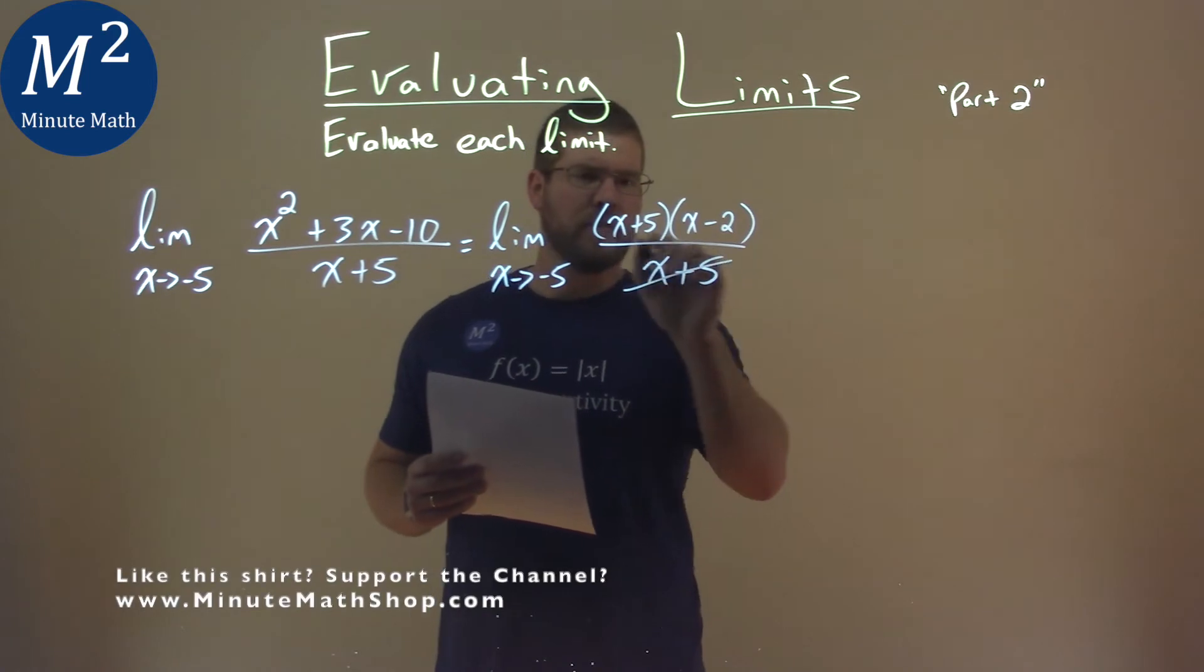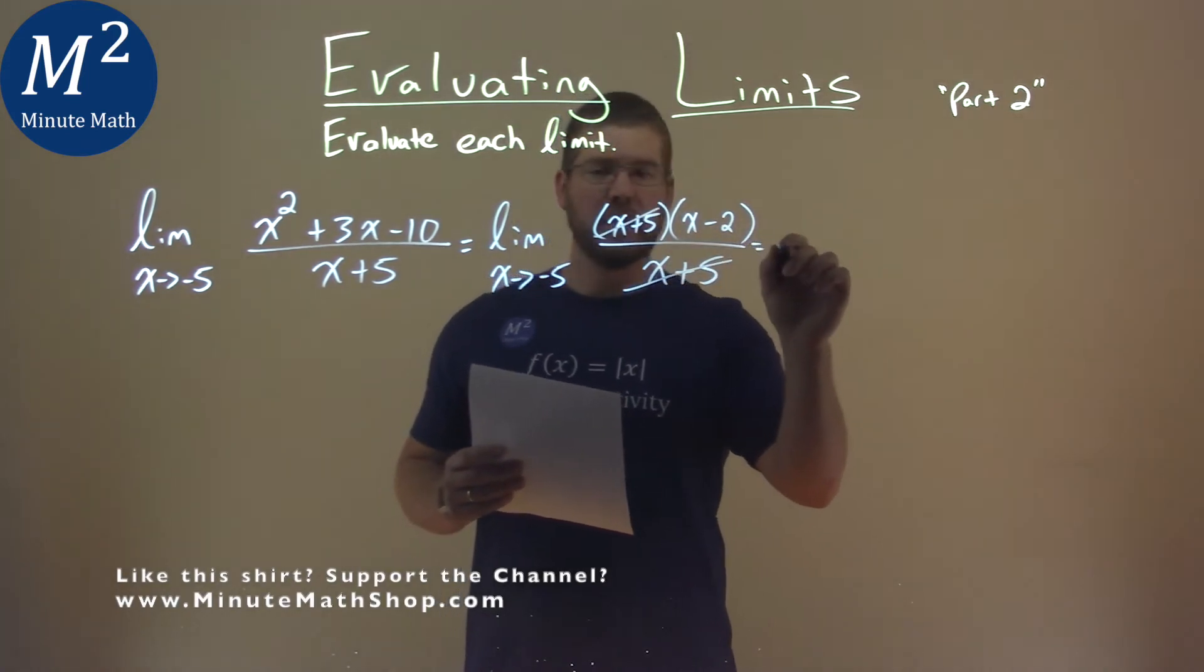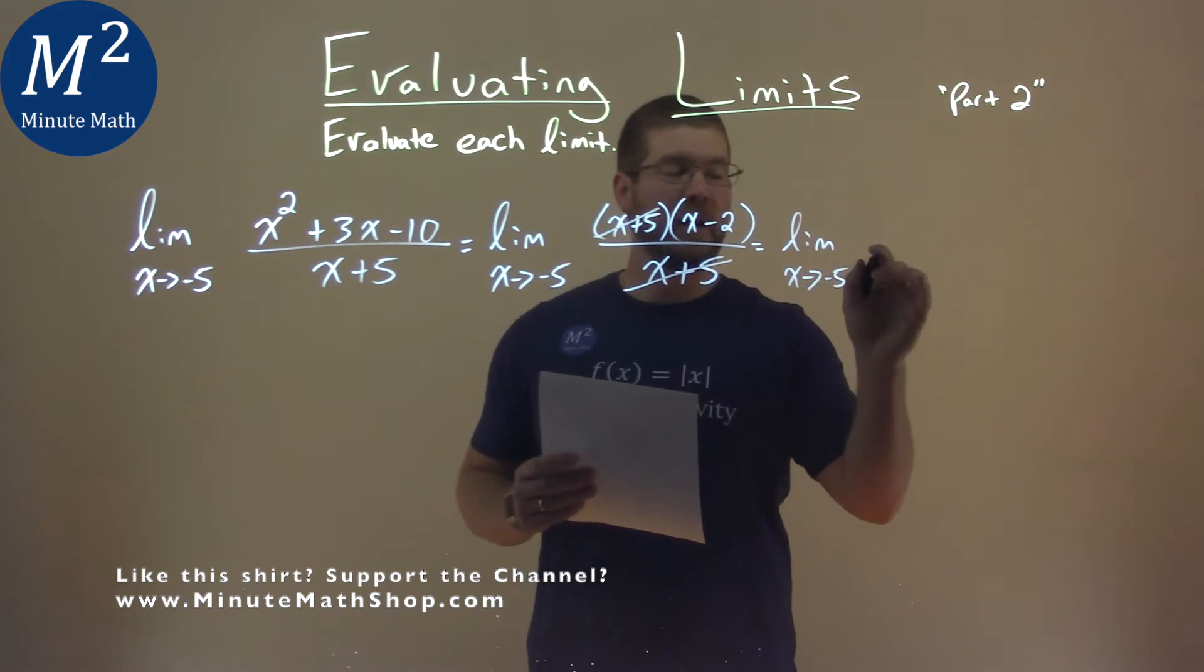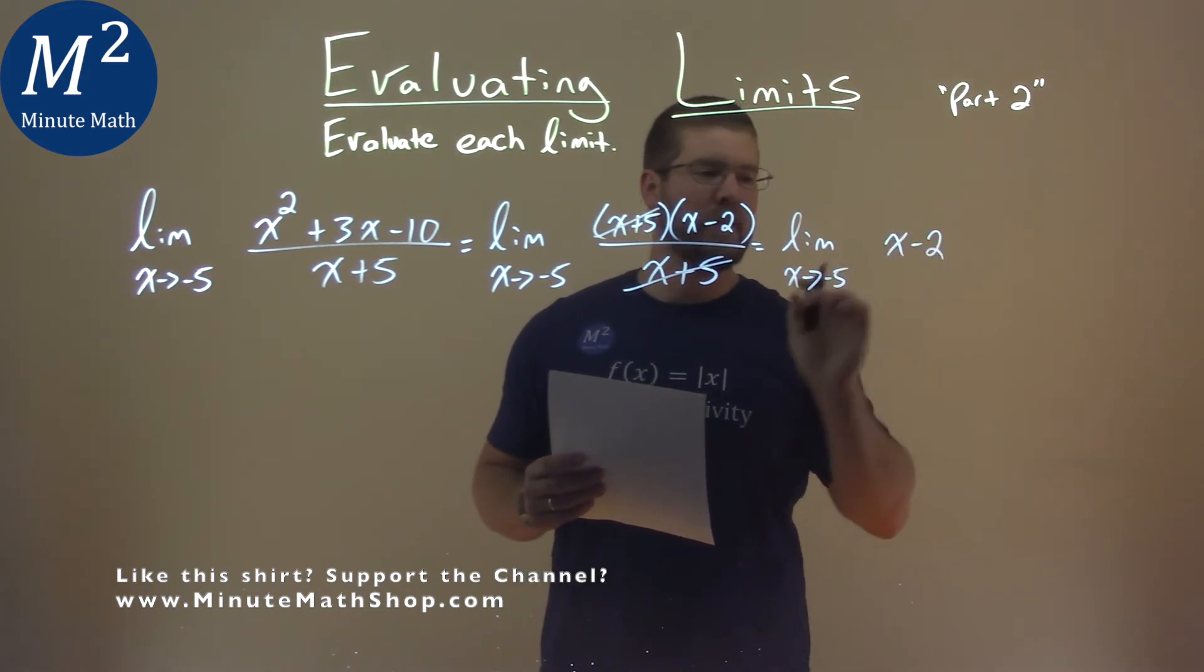Which it does. x plus 5 cancel here, and we're left with now the limit as x approaches negative 5 of that x minus 2 that's in the numerator.